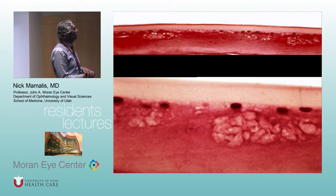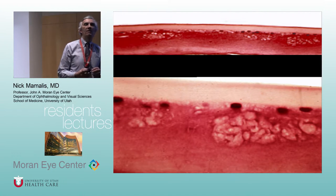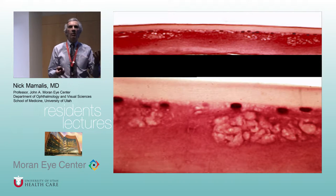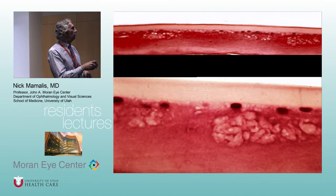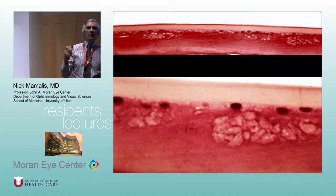With an acute pressure rise, you can also get focal areas of ischemia of the lens epithelial cells — little focal spots under the anterior lens capsule called Glaucomflecken. These eventually go away but are a sign of a previous acute pressure event.